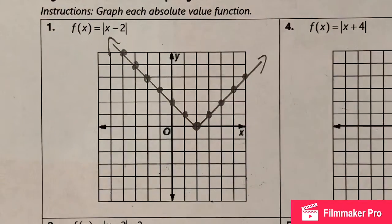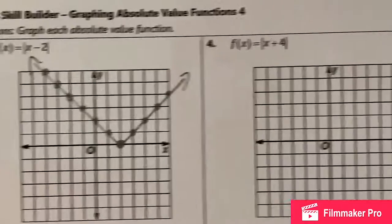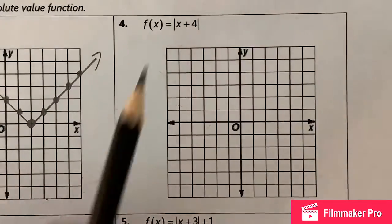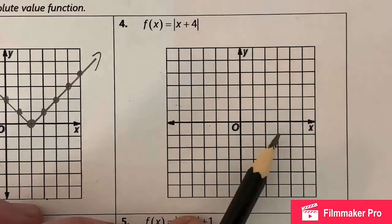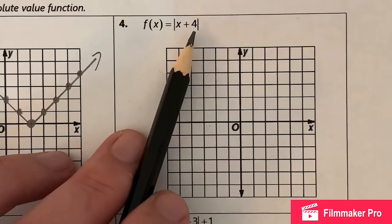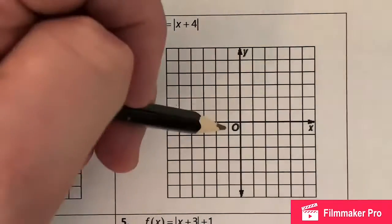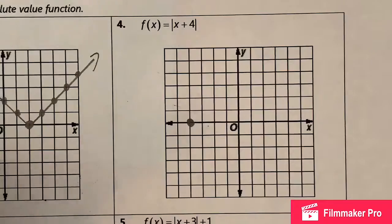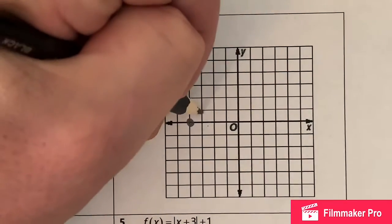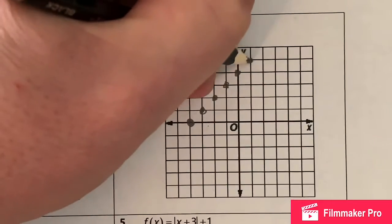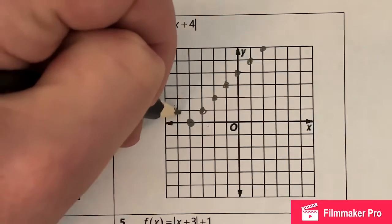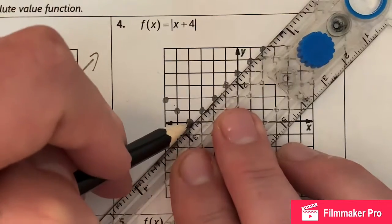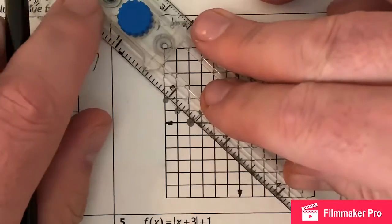The next example: this function is being moved four units, but which way — left or right? Well, that plus four is actually going to go the opposite way, moving it back four units — one, two, three, four — and the vertex is now going to be right here. Again, I just have a one in front, so it's not going to widen or narrow. It's going to be the same exact pattern. Grab your dots and graph these, then take a straight edge.